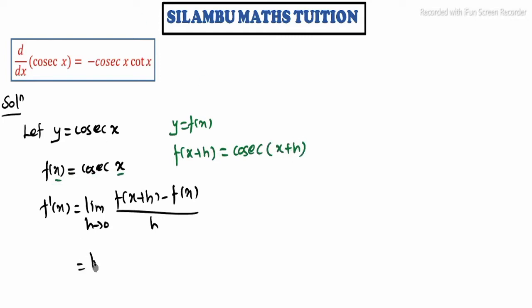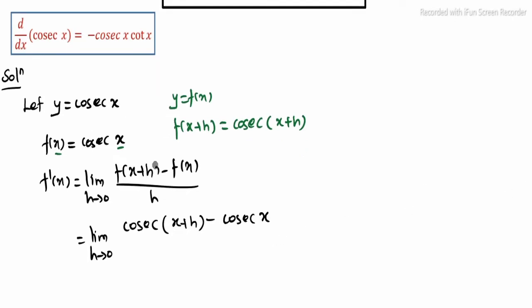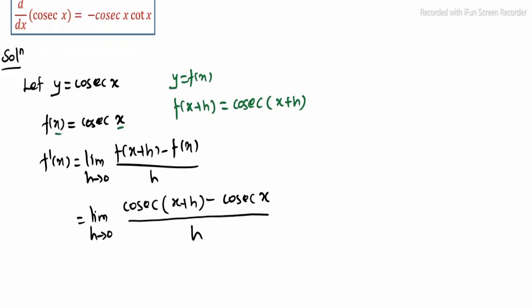Now limit h tending to 0, cosecant of x plus h, aduith minus, cosecant x, total whole divided by h.